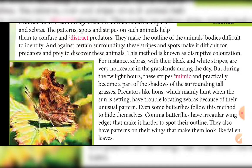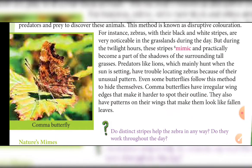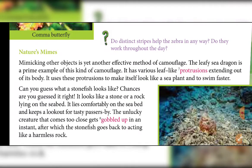Comma butterflies have irregular wings, and the pattern on their wings makes their body look like fallen leaves. No one can identify whether it is a leaf or a butterfly.